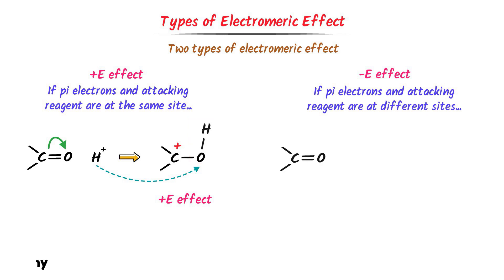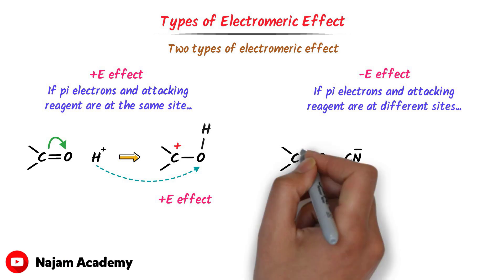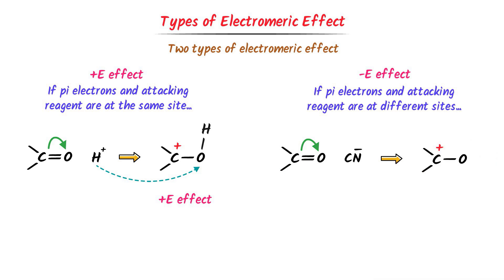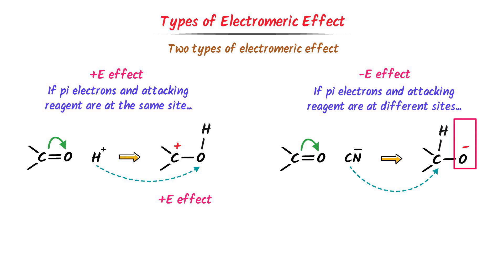On the other hand, consider this case. The pi electrons shift to this oxygen; a positive charge appears on this carbon and a negative charge on this oxygen. Where will the attacking reagent CN⁻ attack? Using the same trick — positive and negative attract — CN⁻ attaches to this positive carbon, giving this organic compound. Here, the pi electrons shifted to oxygen, but the reagent CN⁻ did not attack on the oxygen; rather, it attacked on the opposite side. Pi electrons and attacking reagent are at different sites. Thus, we call this negative electromeric effect.